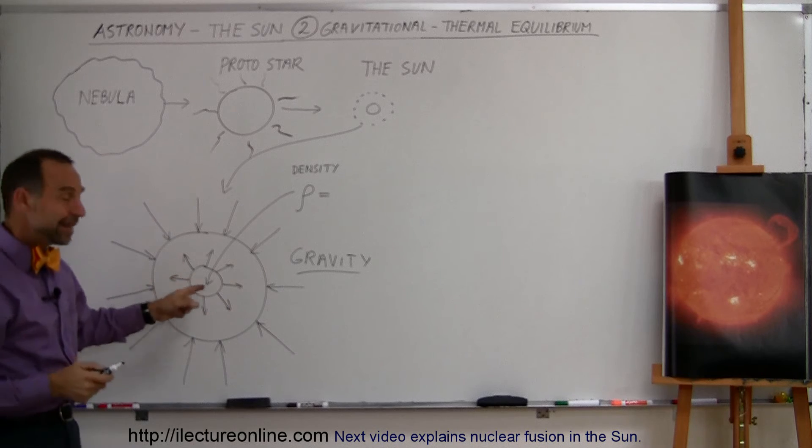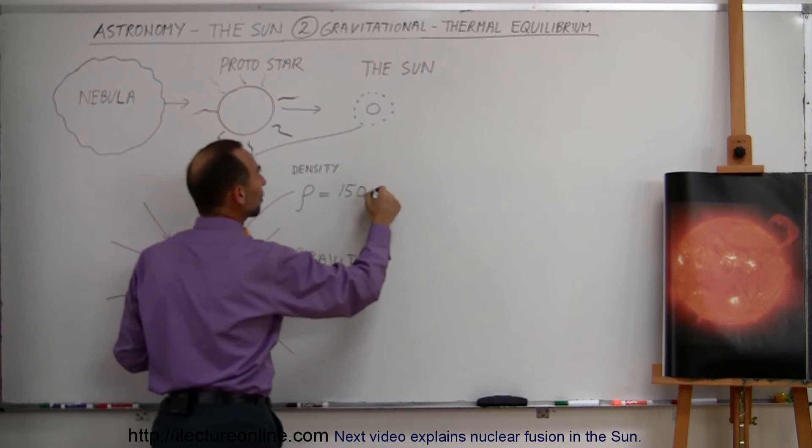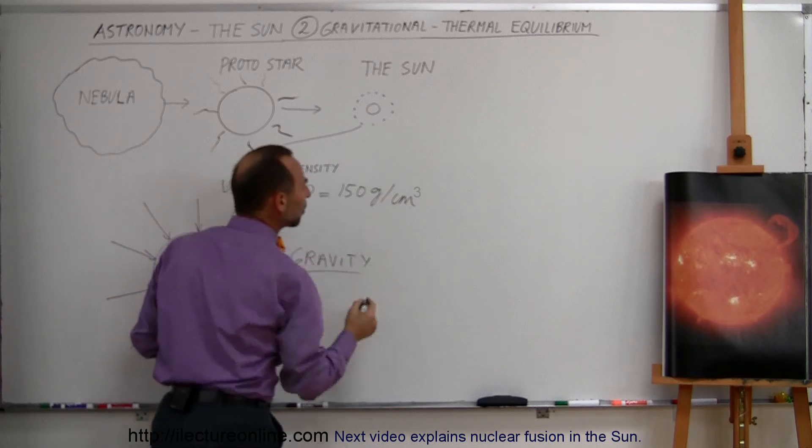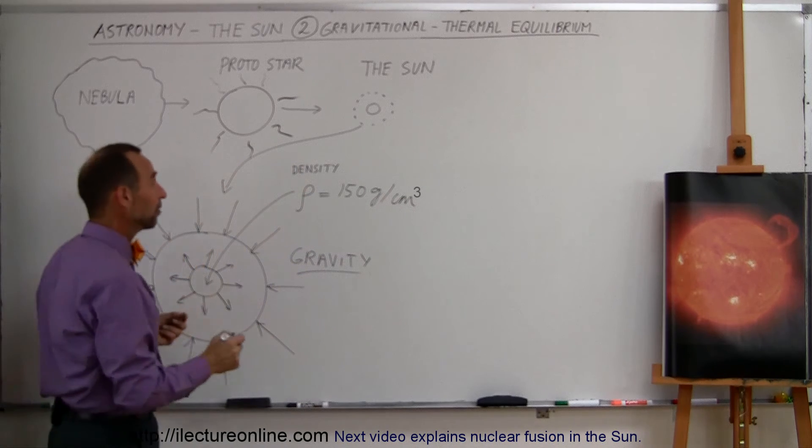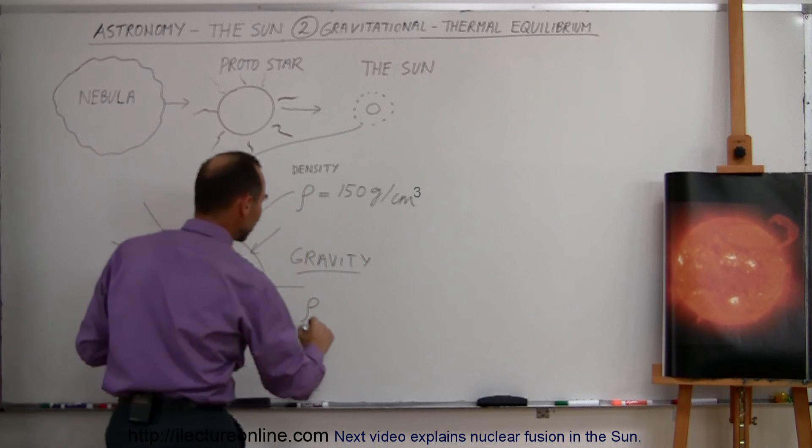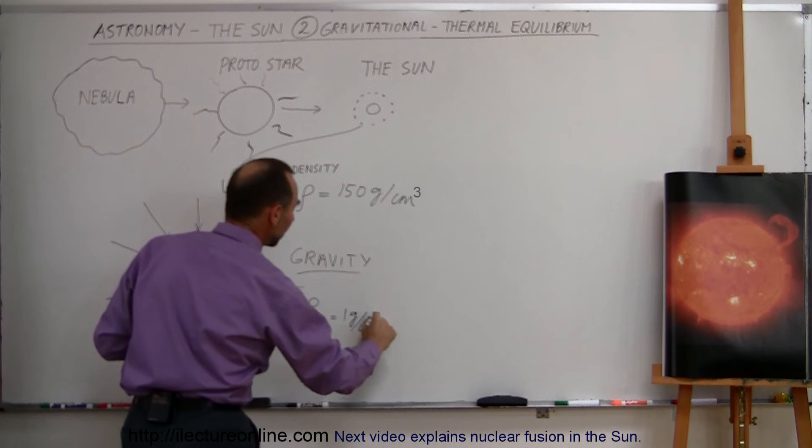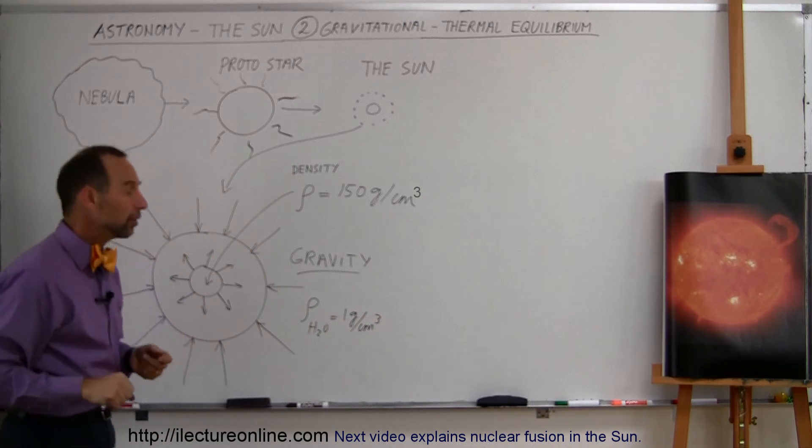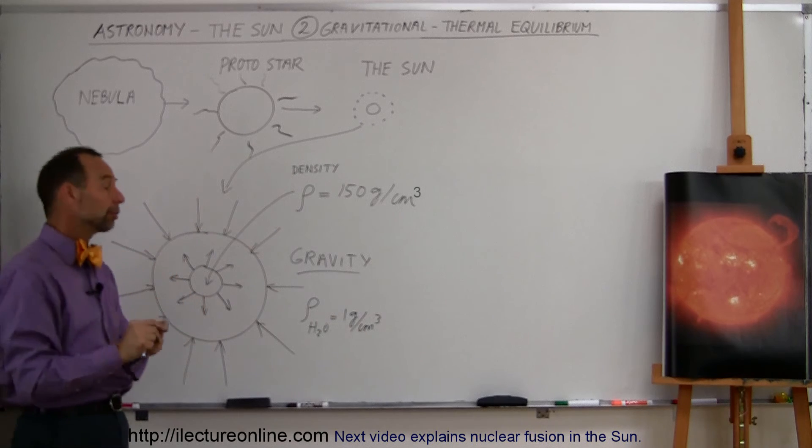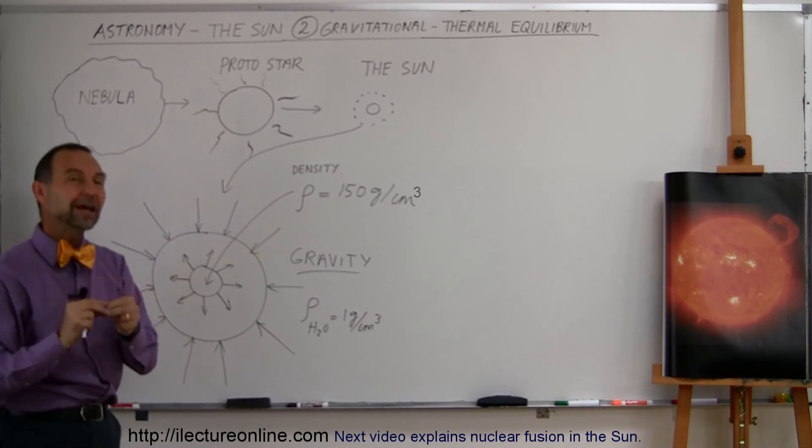Well, it turns out the density at the very center of the sun is about 150 grams per cubic centimeter. Now, to put that into perspective, water on Earth has a density, and this is the symbol we use for density, by the way, it's the Greek letter rho, but the density for water is about 1 gram per cubic centimeter. So when you pull some water out of the ocean, the density is roughly 1 gram per cubic centimeter, which means the density at the center of the sun is 150 times that much.